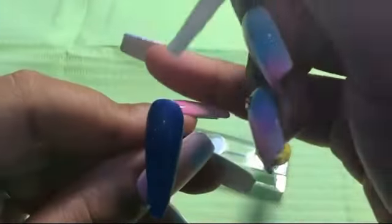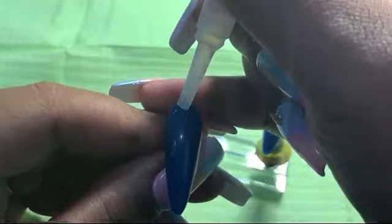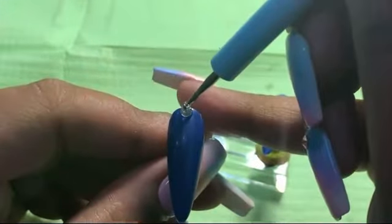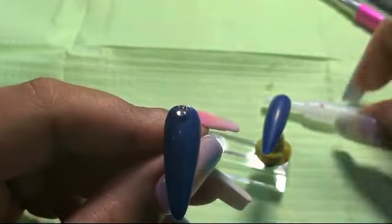Now we're taking it back in the day before all this rhinestone glue and builder gel and all that was even a thing. Take just a tad bit, the smallest little dot of nail glue, place it onto the nail where you want to put the rhinestone. Place the rhinestone. Do not push it down. That's going to smear the glue everywhere.